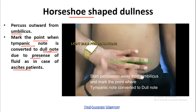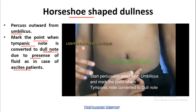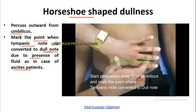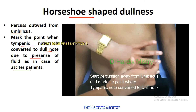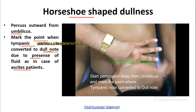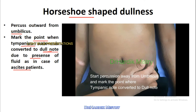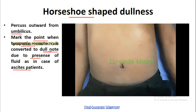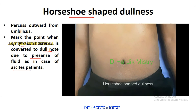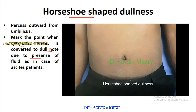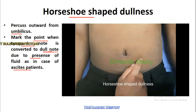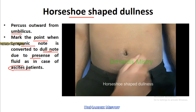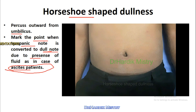Whenever you join all the points where the tympanic note is converted to the dull note, it looks like a U — that's why it is known as Horseshoe shape dullness. And it is only present in ascites patients. Thanks.